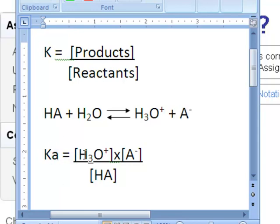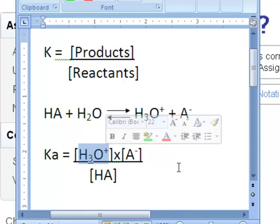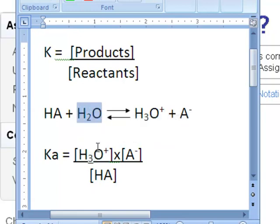And it's written as the H3O+ ion concentration times the A- concentration divided by the concentration of the acid molecule. Again, water is not included in the equilibrium constant.